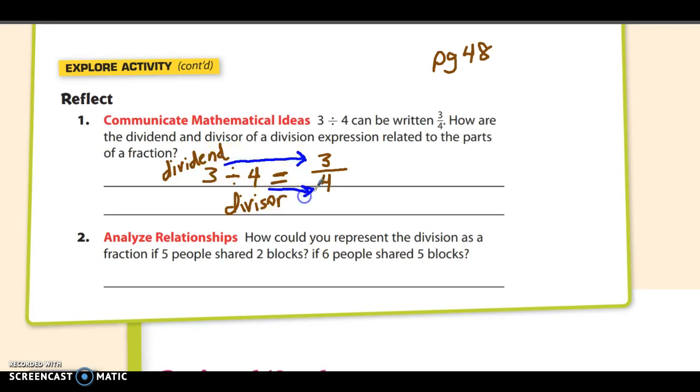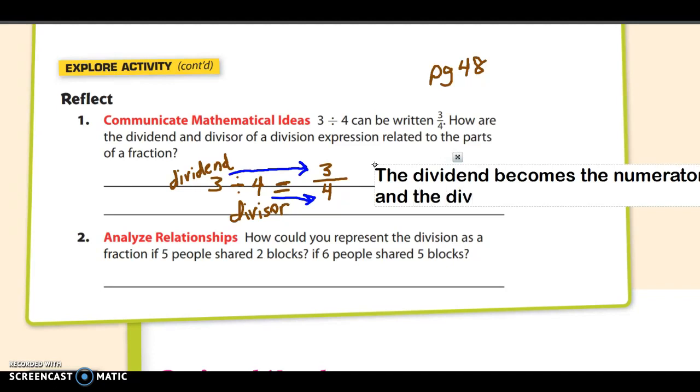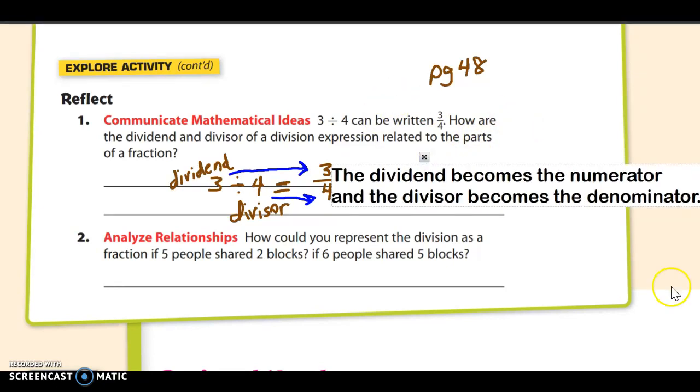So I'm going to type that, it's kind of a summary here. That's kind of what it's asking for: the dividend becomes the numerator and the divisor becomes the denominator. And I think that's going to go off the screen, but I can drag it over. I think you can probably see it now. The dividend becomes the numerator and the divisor becomes the denominator.